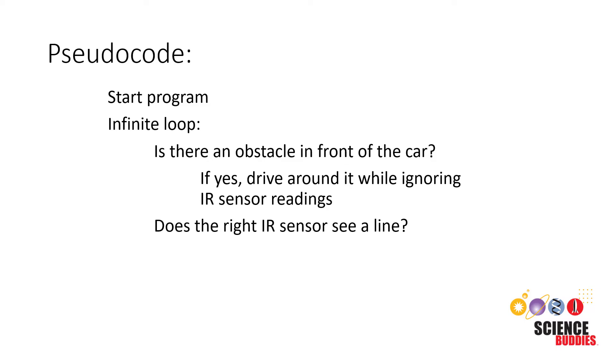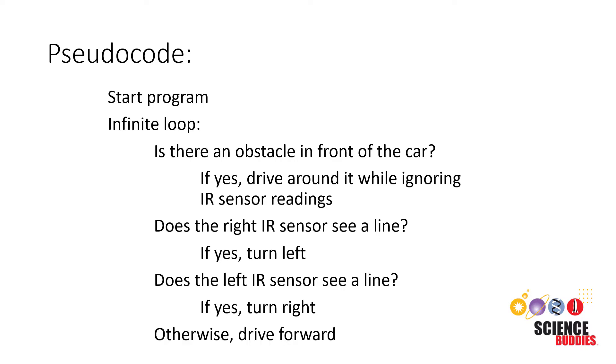If the right infrared sensor sees a line, we know we need to turn left, and if the left infrared sensor sees a line, we know we need to turn right. If none of those conditions are met, then we know it's safe to drive forward.